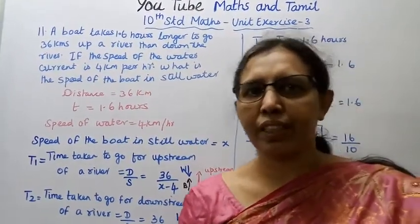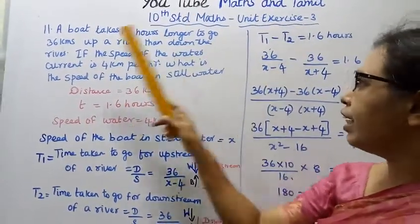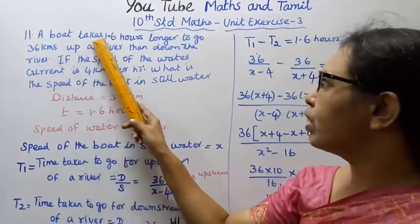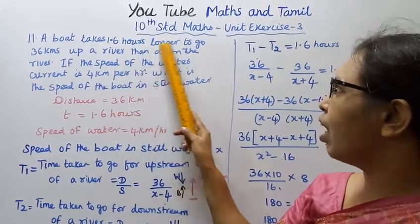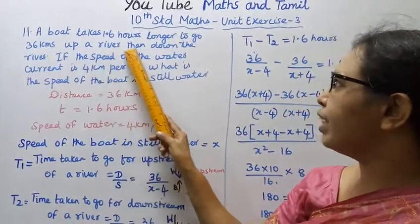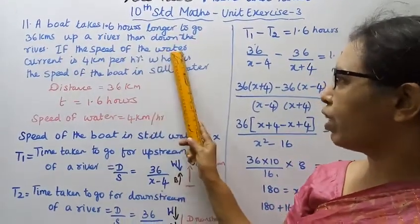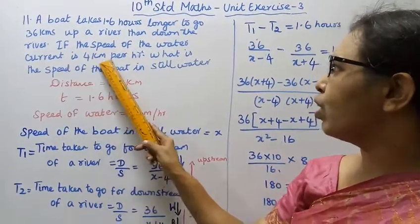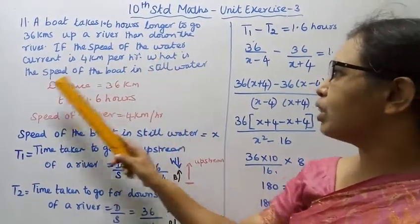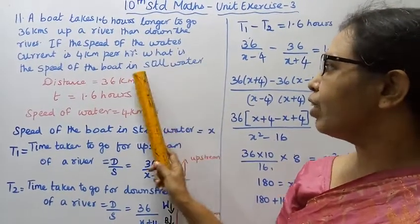Hello students, welcome to Max and Tumble channel, 10th standard maths unit exercise 3, problem 11. A boat takes 1.6 hours longer to go 36 kilometers up river than down the river. If the speed of the water current is 4 kilometers per hour, what is the speed of the boat in still water?